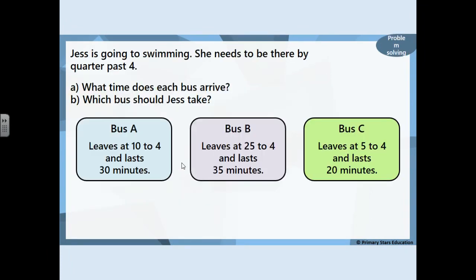Here's the final question. Jess is going swimming and needs to be there by quarter past 4. Which bus should she take? Bus A leaves at 10 to 4 and lasts 30 minutes. Bus B leaves at 25 to 4 and lasts 35 minutes. Bus C leaves at 5 to 4 and lasts 20 minutes. Work out what time each bus arrives, then decide which bus Jess should take.